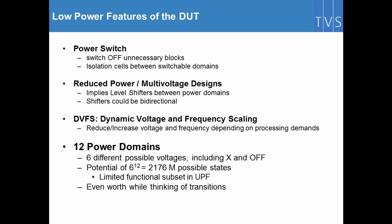There are about 12 power domains, and as we've seen in previous slides, this could lead to millions of possible states. In our case, only about 250 to 300 states were valid and used, so hopefully we do not need to go through all the billions of states. But if you think about transitions, this is the real question — it could be huge to go through all the different transitions.